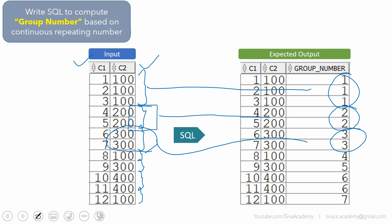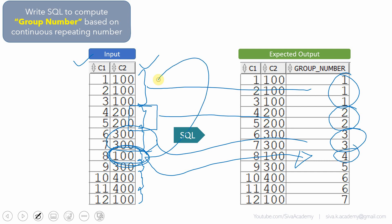One key thing: if the same number repeats again, we need to give it another group number. For example, in this case, 100 appears again and we need to give it group number 4. We should not club this 100 with the initial group — it should be given a new group number. This is the expectation.